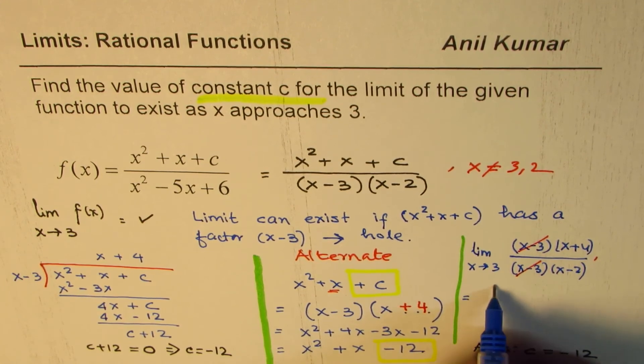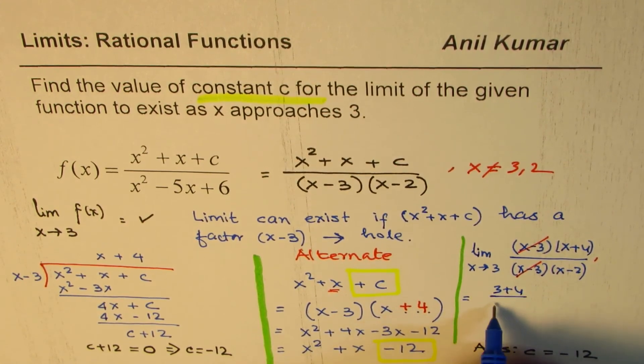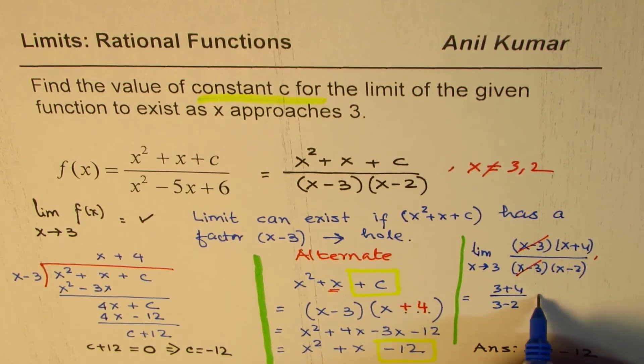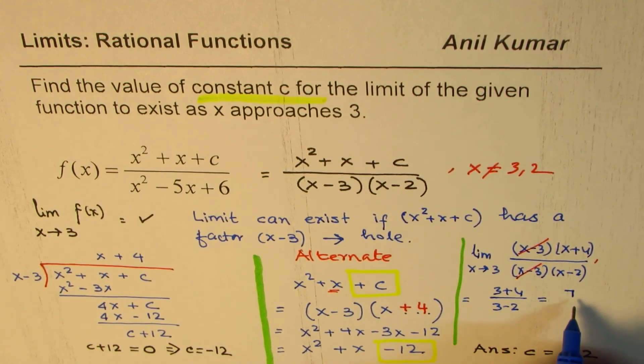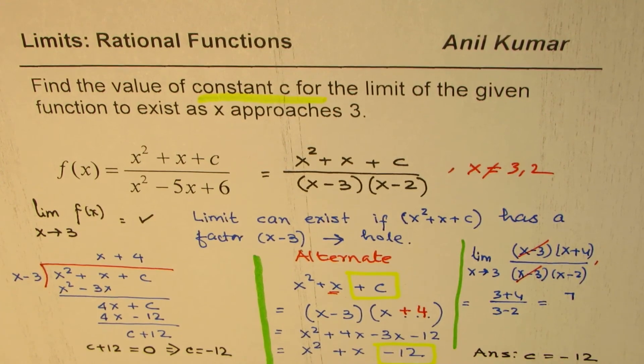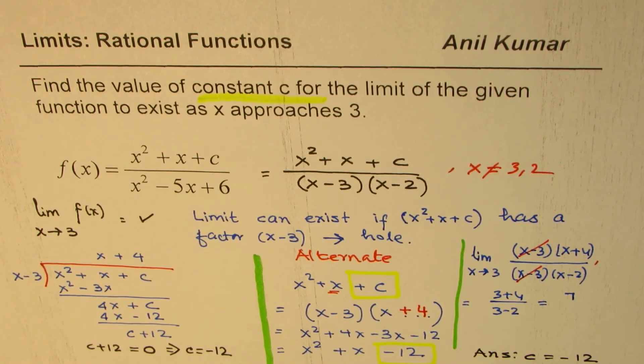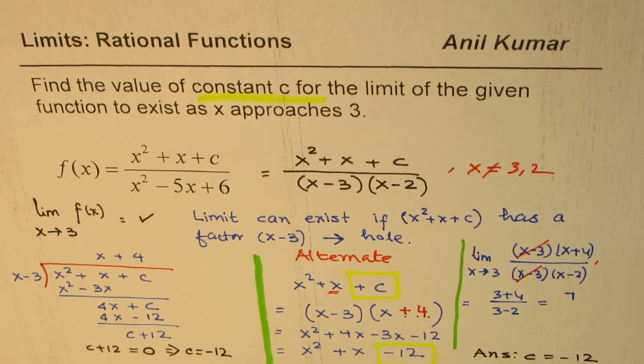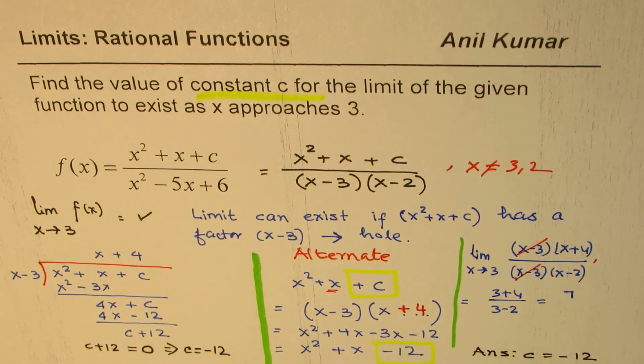Substitute 3 here. So we get 3 plus 4 over 3 minus 2, which is 7. So the limit of this function is 7 and the value of c is minus 12. So that's just an extension to show you that we have just the right answer. Anil Kumar, and I hope that helps. Thank you and all the best.